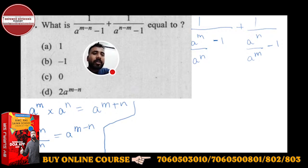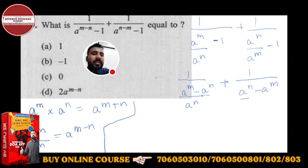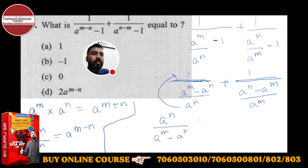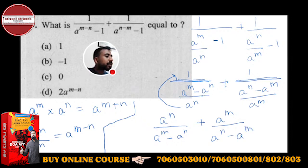If we take LCM here, the LCM will be nothing but a^n only. So it will come: (a^m − a^n + 1) upon (a^n − a^m). LCM is nothing but a^m. So a^n will go to the numerator. This is the main division. If you use the division method, it will become a^n upon (a^m − a^n). Then plus a^m upon (a^n − a^m).